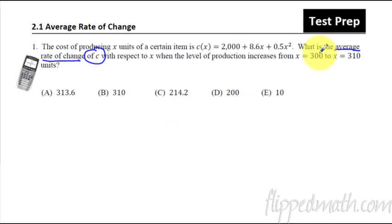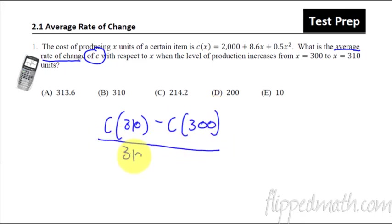So we have 300 and 310. All that means is you're doing C(310) minus C(300), and then all over 310 minus 300. That's all you got to do. So you can use the calculator to help you figure that out - plug in the points and you're good.